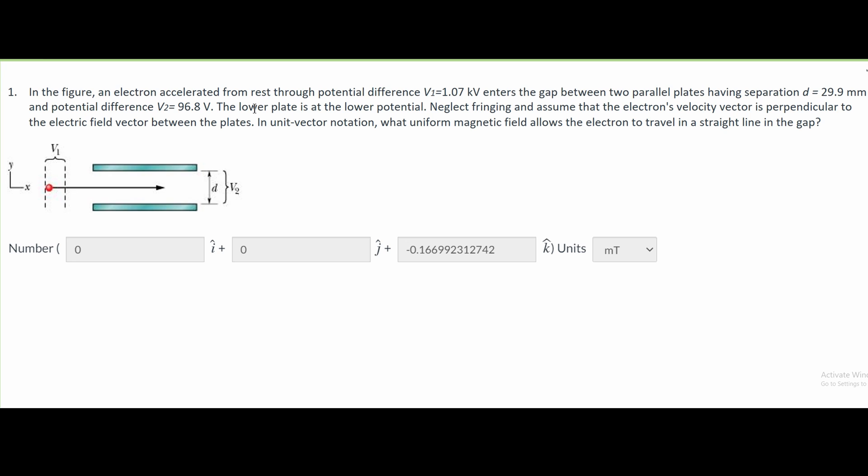The lower plate is at the lower potential. We're supposed to neglect fringing and assume that the electron's velocity vector is perpendicular to the electric field vector between the plates. In unit vector notation, what uniform magnetic field allows the electron to travel in a straight line in the gap?